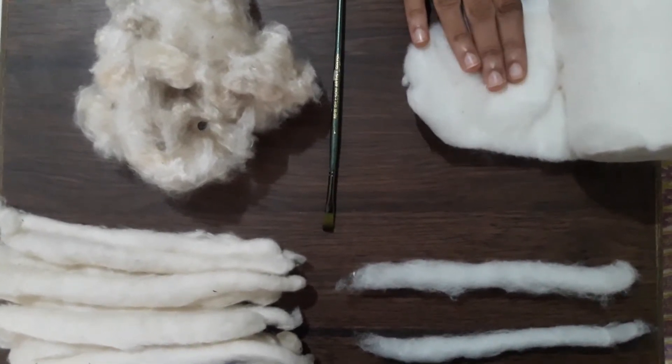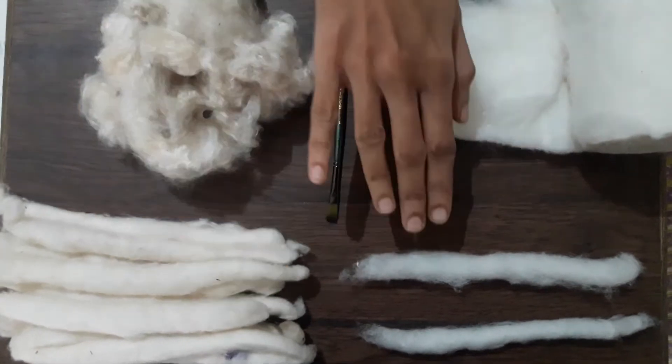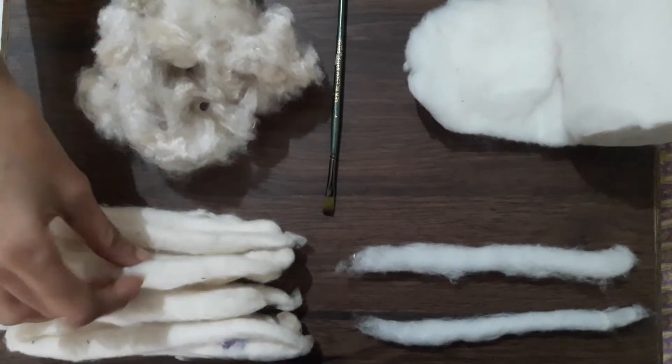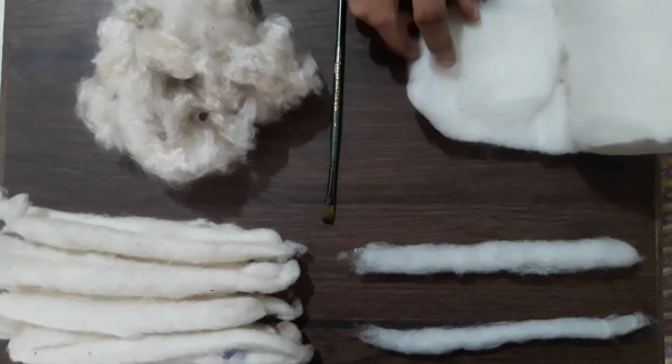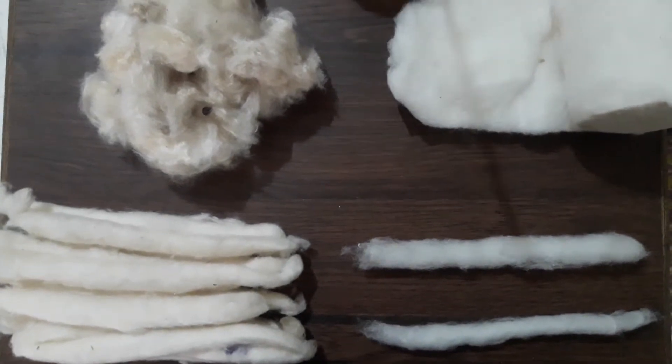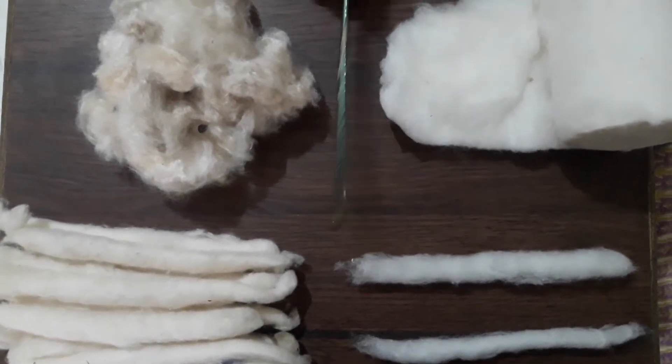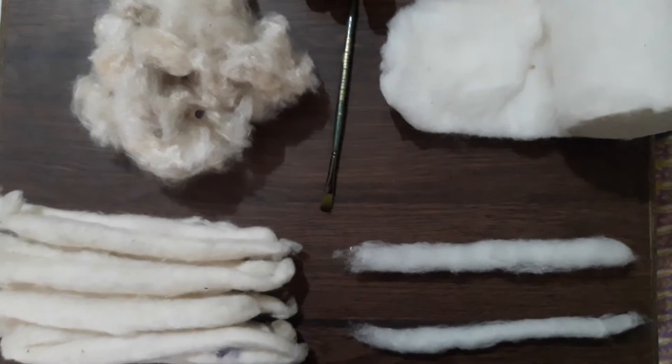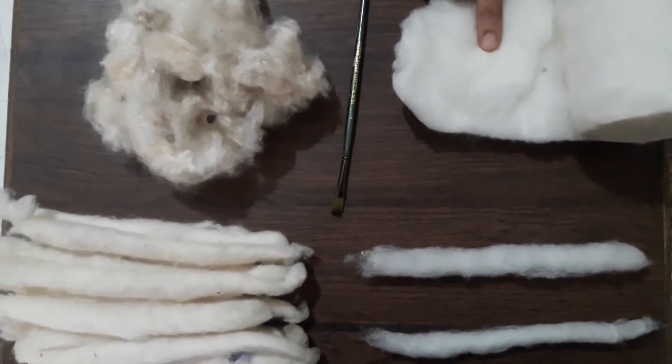The first step is making the sliver. This is the puni, the sliver. For that all that we need is a painting brush, a thin long painting brush, and surgical cotton.